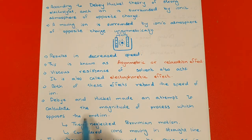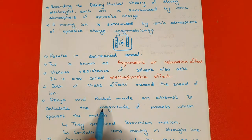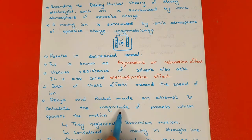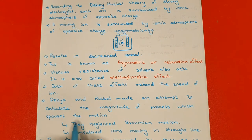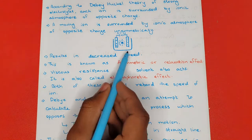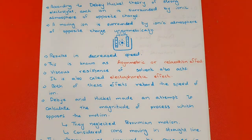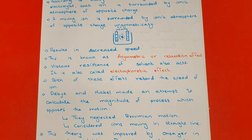Debye and Hückel made an attempt to calculate the magnitude of the processes which oppose the motion of the ion going towards the electrode. They calculated the magnitude of the process which opposes the motion.